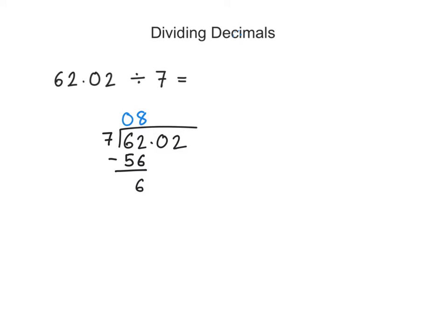Now what I do, I need to bring this 0 down here. And immediately I need to place this decimal point here. And then we ask ourselves: how many 7s go into 60? Well clearly in 60 there are 8 lots of 7. And 7 times 8 is 56, so the remainder is 4.